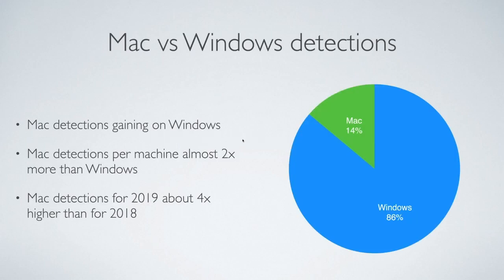We did some research and looked into our numbers at Malwarebytes last year, 2019, and found some very interesting things. We found that Mac detections had gained quite a bit on Windows — we were seeing about 14% of our overall detections were Mac detections. Now 14% is not a huge number, but we have to consider that we have a lot fewer Macs in our install base than Windows machines — tens of millions of Windows machines versus a substantially smaller number of Macs. So this data is coming in from a smaller group.